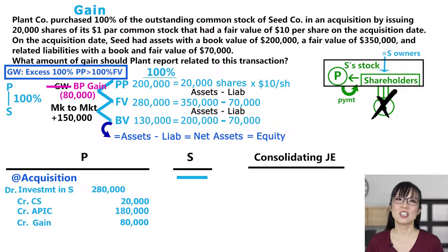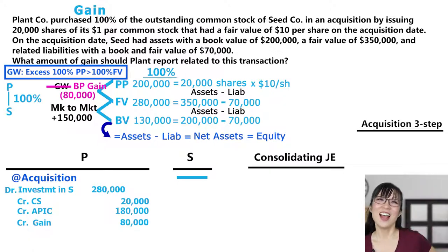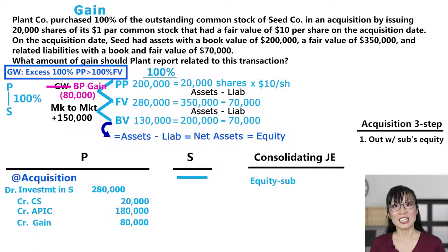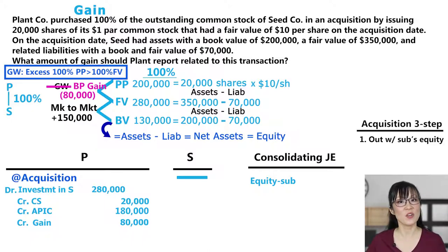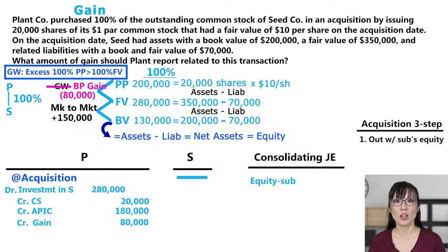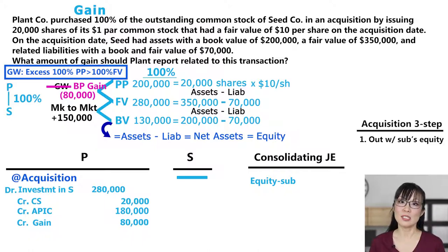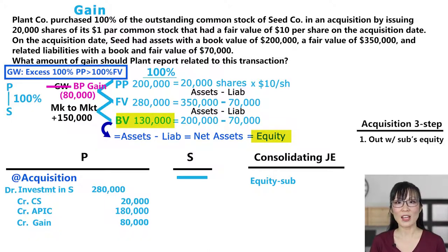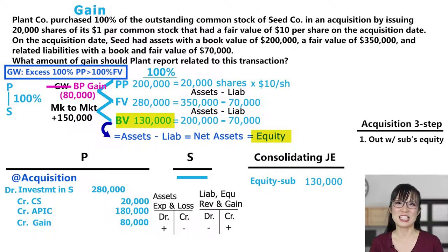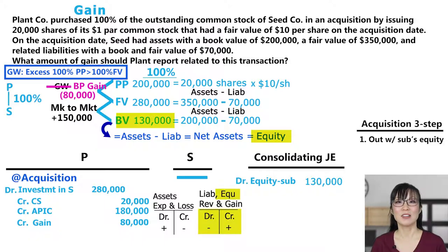Now, to consolidate the acquisition, we go to our acquisition three steps. Step one: out with Sub's equity. Plant bought Seed's common stock, which is equity. When Plant and Seed are separate entities, that's fine, but now they're together as one entity and you can't own a part of yourself. So you have to get rid of all of Seed's equity because it's owned by Plant itself. Here they don't give us Seed's individual equity accounts like common stock, APIC, or retained earnings, but we know the aggregate amount — Seed's book value, which equals Seed's equity: $130,000. Equity has a normal credit balance, so to get rid of it, we debit equity of sub.